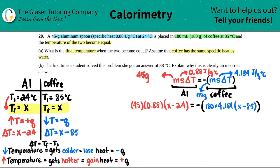Now this just basically comes down to algebra. What I would do is multiply these two numbers first just to get them as one number. 45 times 0.88 gives me 39.6 times (X - 24). This is all going to equal negative—180 times 4.184 is a big number, don't be scared—753.12 times (X - 85).